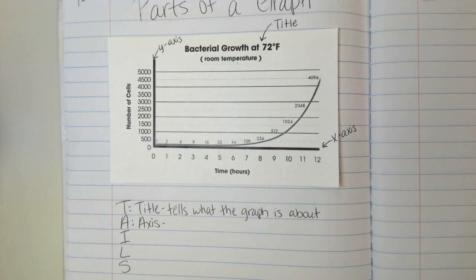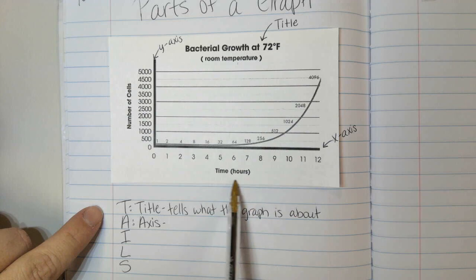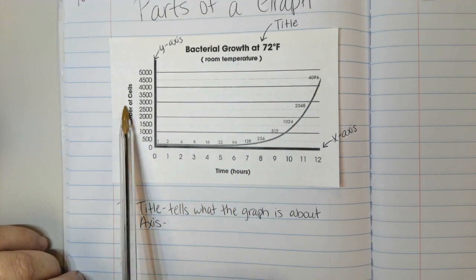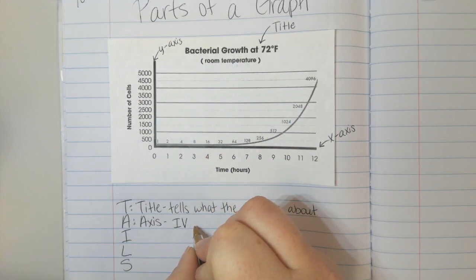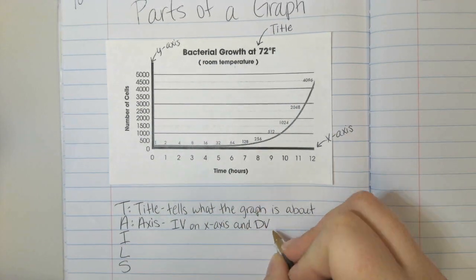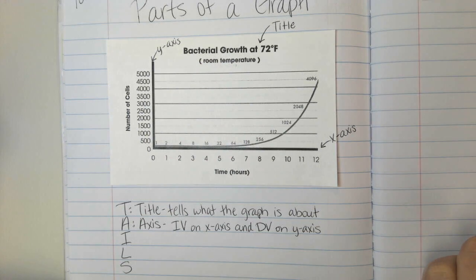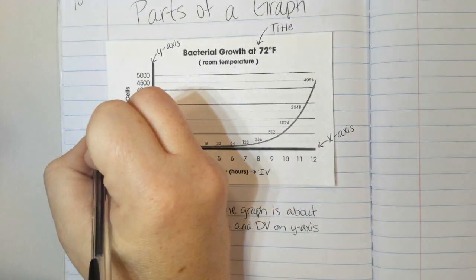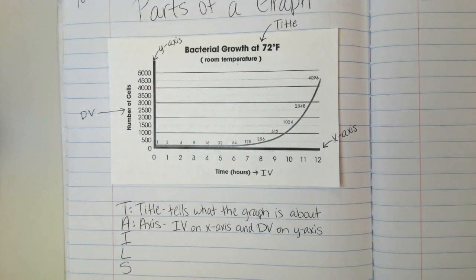It's important to know which variable to put on each axis. That's the most important part about the A. The independent variable, whatever was manipulated by the scientist, goes on the X axis. And the dependent variable, what you measure, goes on the Y axis. So I'm going to write IV for independent variable on X axis and DV for dependent variable on Y axis. So in this case, the independent variable was time and the dependent variable was the number of cells.